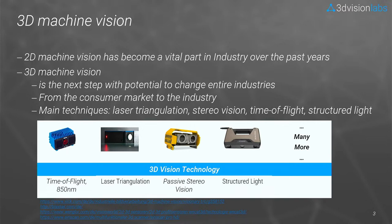Currently there are four main techniques available for 3D cameras: time of flight, laser triangulation, passive stereo vision, and structured light. There is a vast amount of available devices in the market, so you can buy them and realize applications. Each of those technologies provides its own set of distinct performance parameters and is therefore optimized for certain applications. In other words, there is no single device that can fulfill each and every application — you always have the choice.